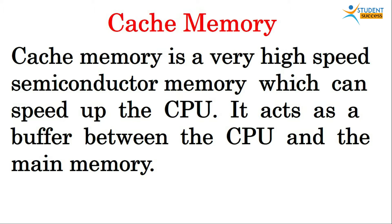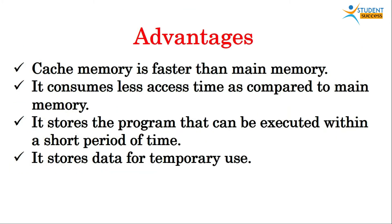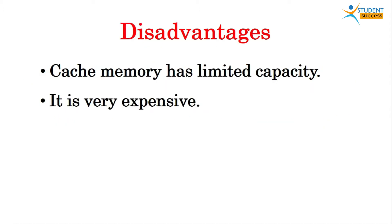First we will discuss cache memory. Cache memory is a very high-speed semiconductor memory which can speed up the CPU. It acts as a buffer between the CPU and the main memory. Advantages: it is faster than the main memory, it consumes less access time, it stores programs that can be executed within a short period of time, and it stores data on a temporary basis. The disadvantage is that cache memory has limited capacity and it is very expensive compared to other memories.